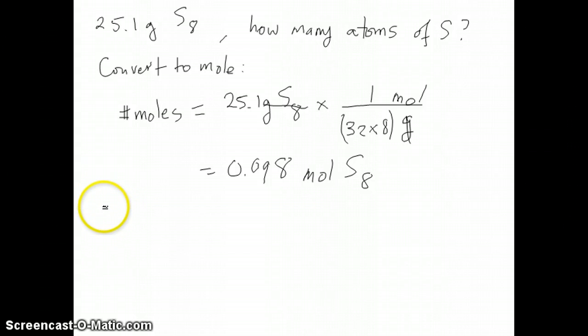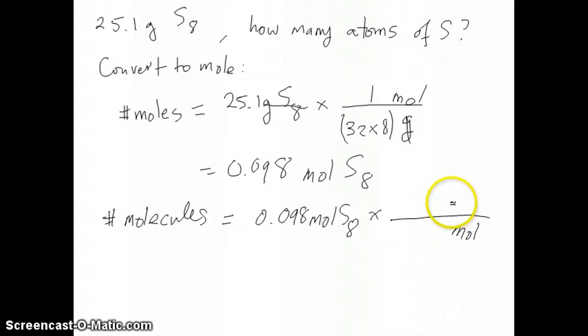The next thing we need to do is convert this to number of molecules. This is a molecule, not just an atom because it has multiple of these guys around. Number of molecules is then 0.098 moles of S8 multiplied by, remember, in every mole we have a given number of particles, and it's always Avogadro's number, 6.02 times 10 to the 23rd. You do that multiplication, what you get is 6.08 times 10 to the 22 S8 molecules.